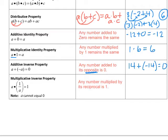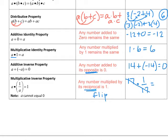The multiplicative inverse property states that any number multiplied by its reciprocal is just one. For instance, the number 17 multiplied by its reciprocal — reciprocal just means to reverse the lower and upper number, so we're flipping the number — gives us 1 over 17, because 17 over 1 is really what we mean when we write 17. These will cancel, and the result is just one.